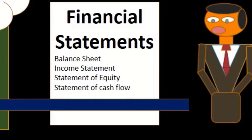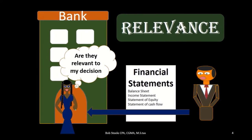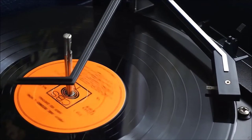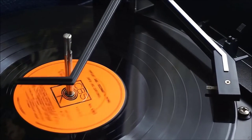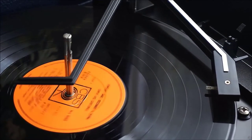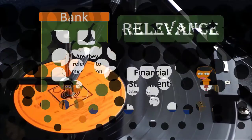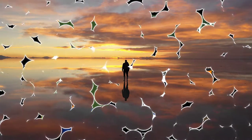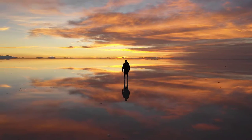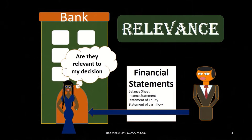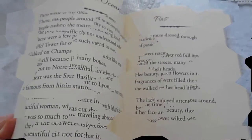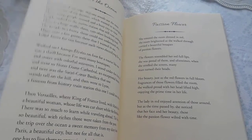We can't have financial statements that are too old, because that won't be relevant to the current decision-making process. The balance sheet tells us where we stand as of this point in time. The income statement — we're probably going to go one to two years back, possibly more, to tell the story of where we got to this point in time.